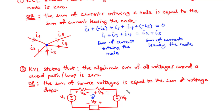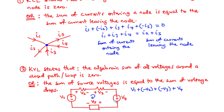For v1, current leaves the positive terminal, so that is a positive voltage component: plus v1. For v2, current leaves the negative terminal, so minus v2. The same applies to v3 — current leaves the negative terminal — so negative v3. For v4, current leaves the positive terminal, so positive v4. Lastly, current leaves the negative terminal for v5, so negative v5. According to KVL, the algebraic sum should equal zero.